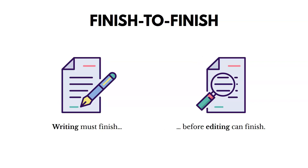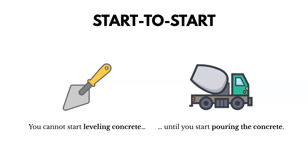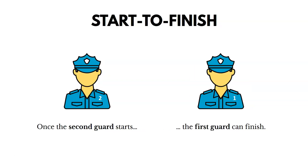In a finish-to-finish relationship: if we're writing a document, we must finish writing it before the editing can finish. We can't finish editing before the writing is done. In a start-to-start relationship: you can't start leveling concrete until you start pouring it — something has to start before you can start another. And in start-to-finish: once the second security guard starts, the first guard can finish. Probably the most common relationship is finish-to-start.